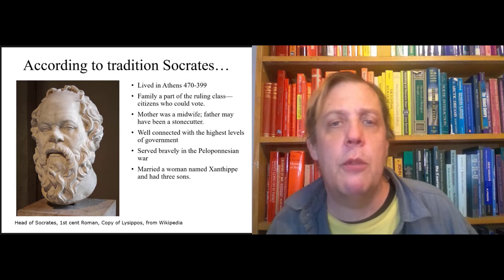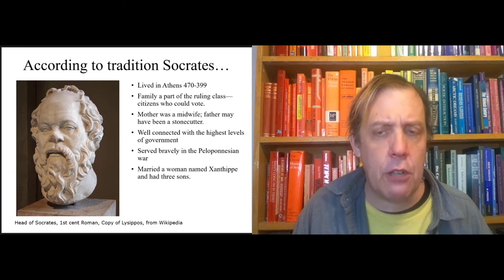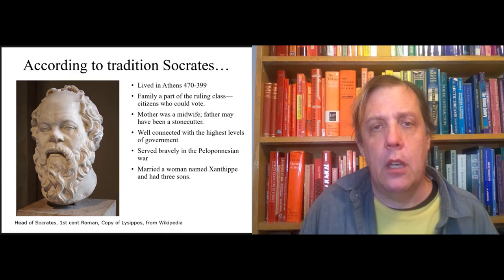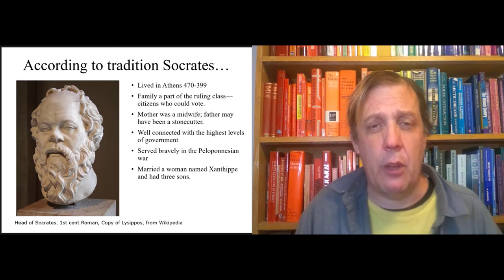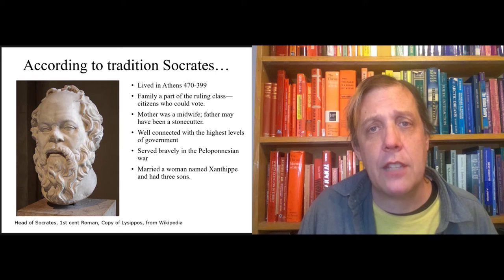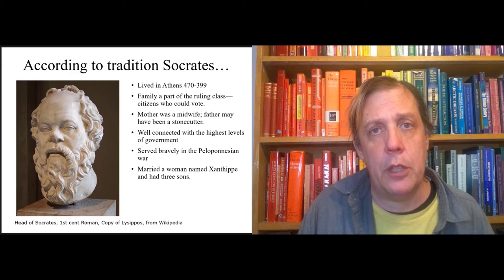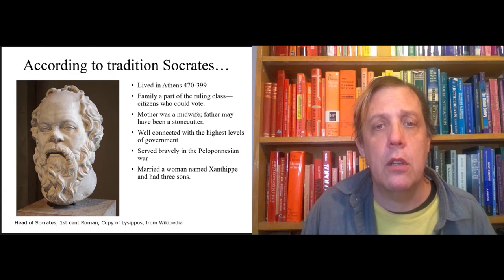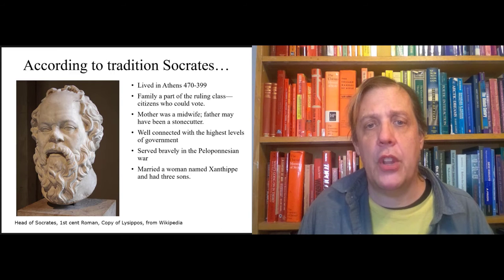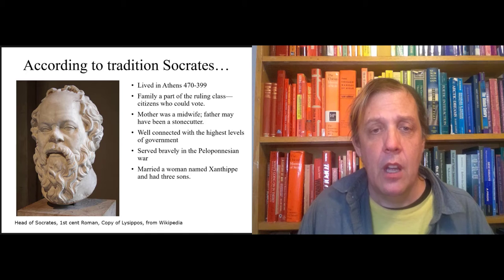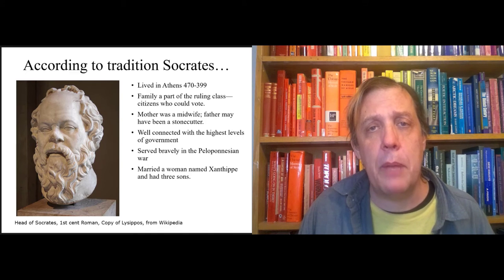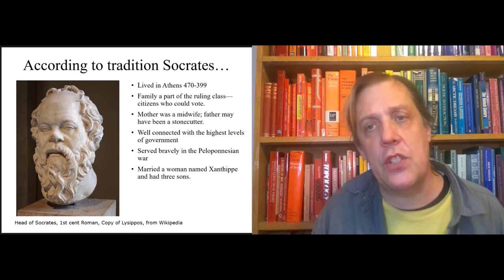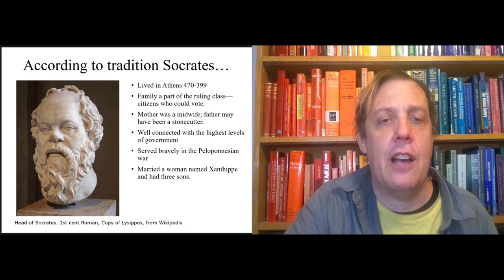According to tradition, Socrates was born into a wealthy aristocratic family around 470 BCE. He died in 399 BCE. So he was about 70, 71 years old. His family was part of the ruling class. They were citizens who could vote. His mother was a midwife, his father may have been a stonecutter. They were well connected to the highest levels of government in Athens. Socrates is known to have served during the Peloponnesian War against Sparta. He married a woman named Xanthippe and had three sons. But none of this makes him the founder of philosophy in the European tradition.